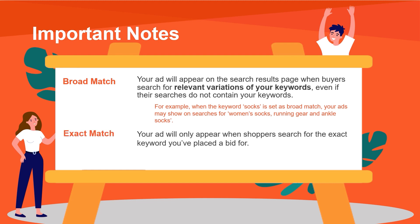When you choose exact match, your ad will only appear when searchers search for the exact keyword you've placed a bid for. For example, when you've set the keyword 'socks', ads will only show on search results for 'socks'.